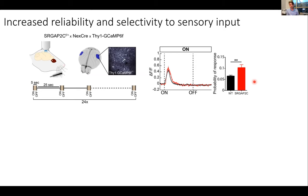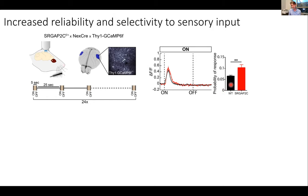By looking at all the different response types, we could see specific changes in how these neurons responded to whisker stimuli. One thing that stood out was the on-response neurons — those responding to the onset of the stimulus. When we looked at the probability of responses, we saw it almost doubled. To give context: layer 2/3 cortical neurons are known to be sparse coders, meaning that even to a simple but strong whisker stimulation, the chance of a neuron responding is actually incredibly low. We confirm this in the wild-type population. The fact that we see this near-doubling in response probability suggests something is really happening to how these neurons respond to sensory inputs.